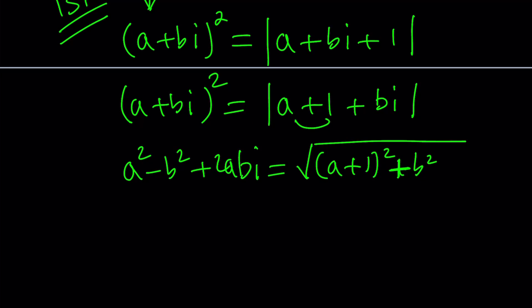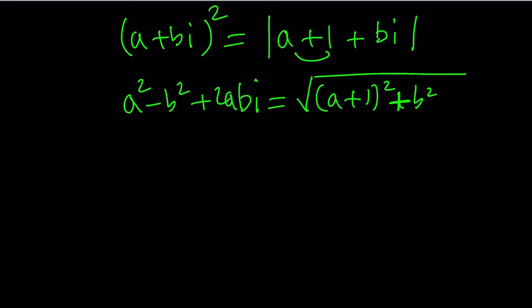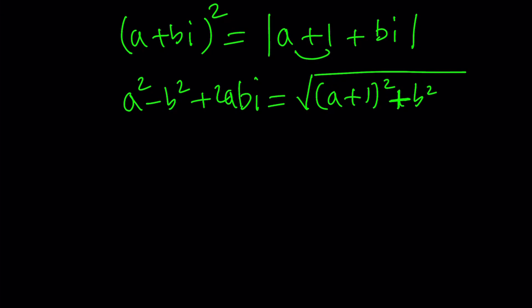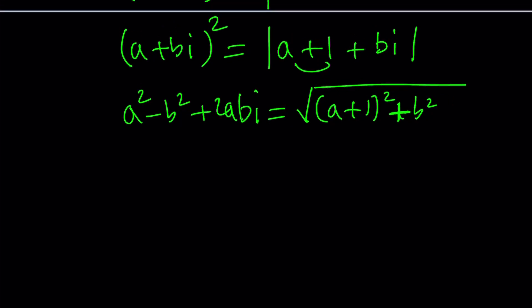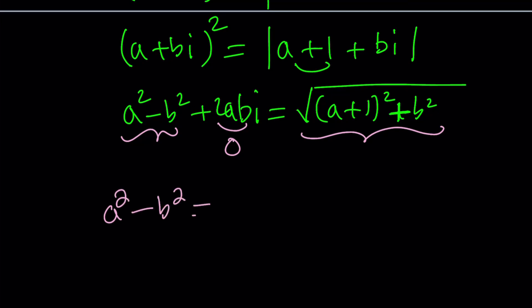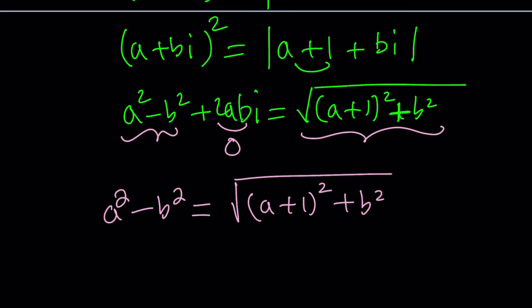We have a complex number with a real part and imaginary part on the left-hand side, but on the right-hand side we only have a real number. This means the imaginary part on the left must equal zero — this is the most critical part. So 2AB equals zero, which means AB equals zero.